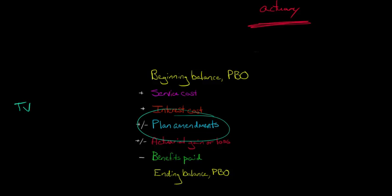And then also plan amendments. Sometimes a firm will grant prior service costs to employees. They say, hey, you did a wonderful job, I'm going to give you an extra couple of years in terms of credit. Instead of saying you've worked here 7 years, we'll treat it for pension purposes as if you worked here 10 years. Or they might actually amend the plan to reduce the amount of benefits that they're giving.